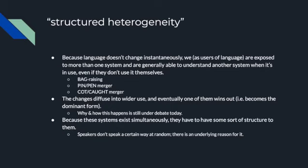The big thing they propose in this paper is structured heterogeneity. Because language doesn't change instantaneously, we as users of language are exposed to more than one system and are generally able to understand another system when it's in use, even if we don't use it ourselves. The three examples are vowel shifts and vowel mergers, but this doesn't apply only to sound changes — it applies also to grammatical changes, vocabulary changes, and all that sort of thing.